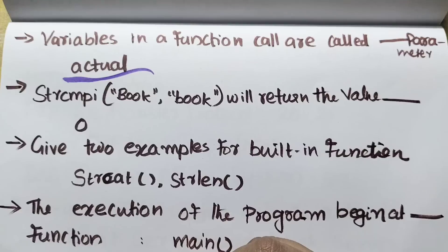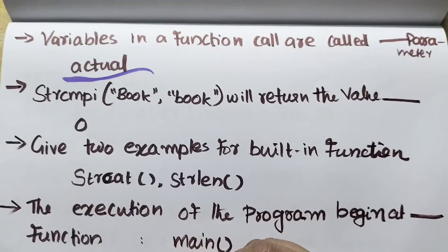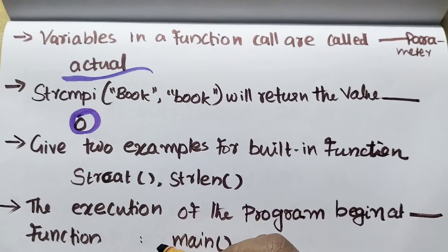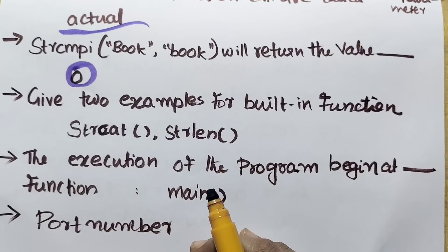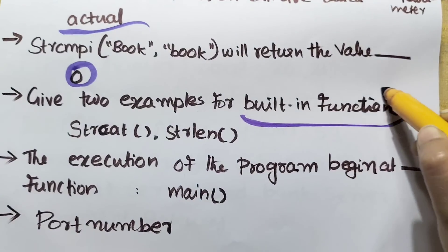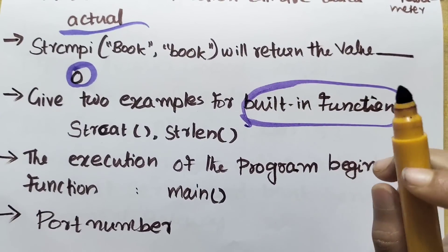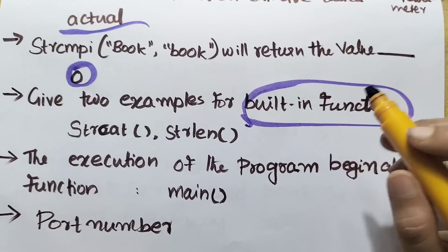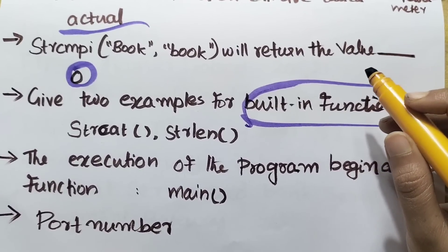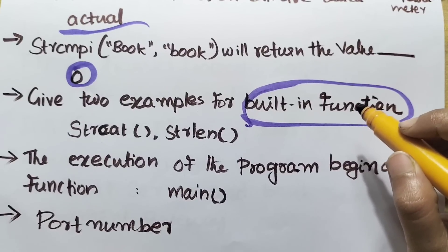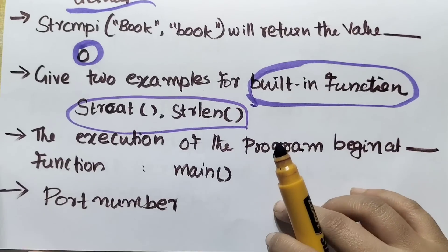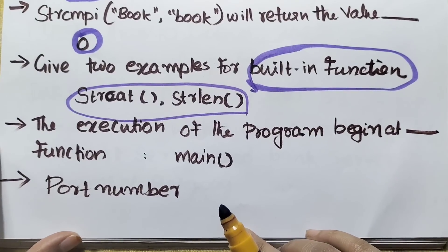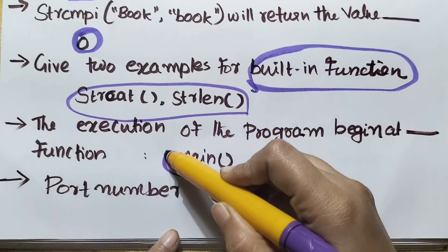strcmpi with double-quoted arguments "BOOK" and "book" in caps lock and small letters will return the value 0. Give two examples of built-in functions: you can use strcmpi() and strlen(). The execution of a program begins at the main function.